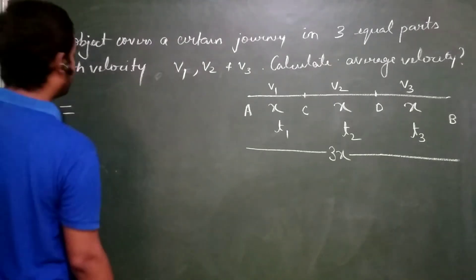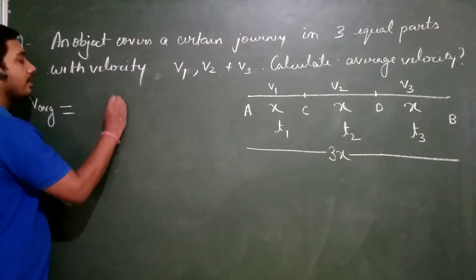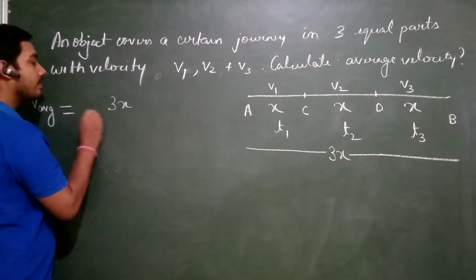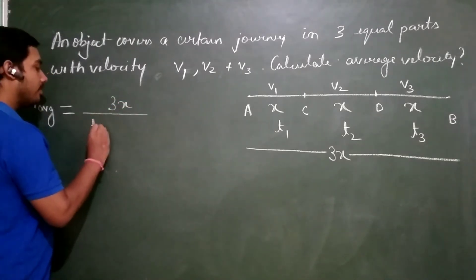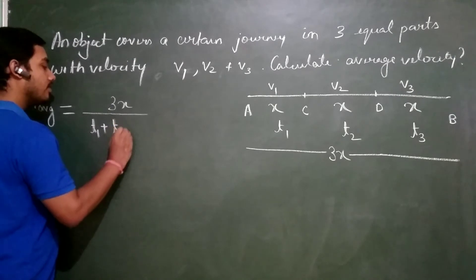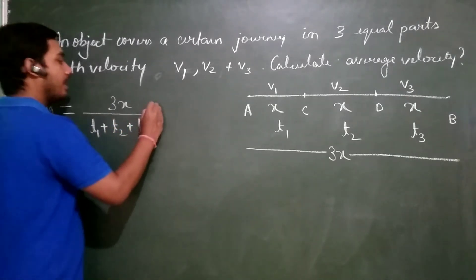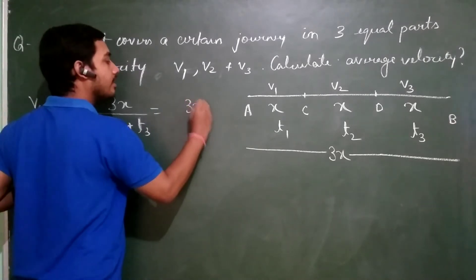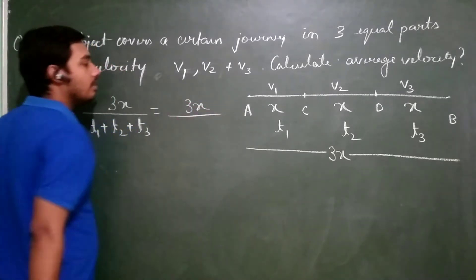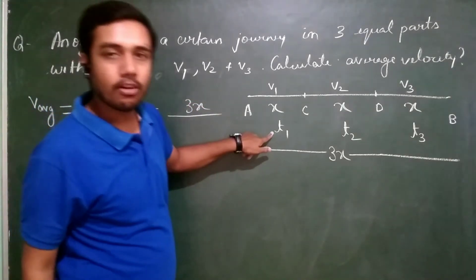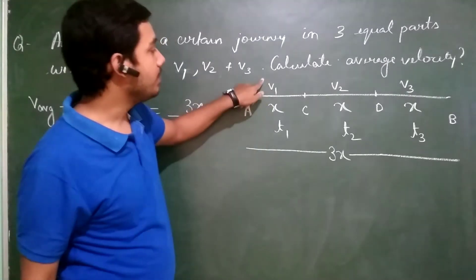See students how to do it, again total distance will be 3x. Total time is T1 plus T2 plus T3. Again this will become 3x upon. Now, what is the formula of time? Distance upon speed.